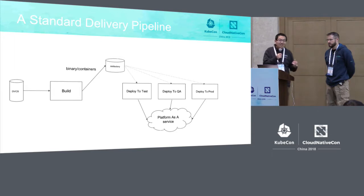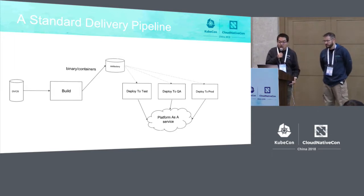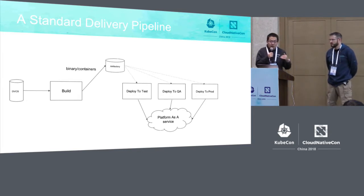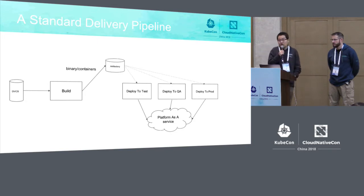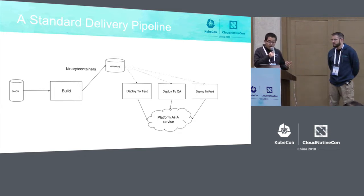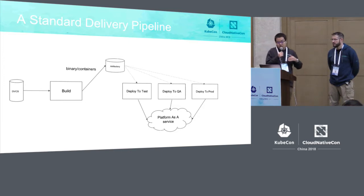You can continue delivery as long as you're checking in code. But because of this automation, if you have even one point of compromise — for example, malicious code someone checked into GitHub — because you have continuous delivery, it can make it up into your production environment. So how to secure your production environment is critical. We're going to explain some principles to secure your pipeline and make sure you don't get malicious code into production.